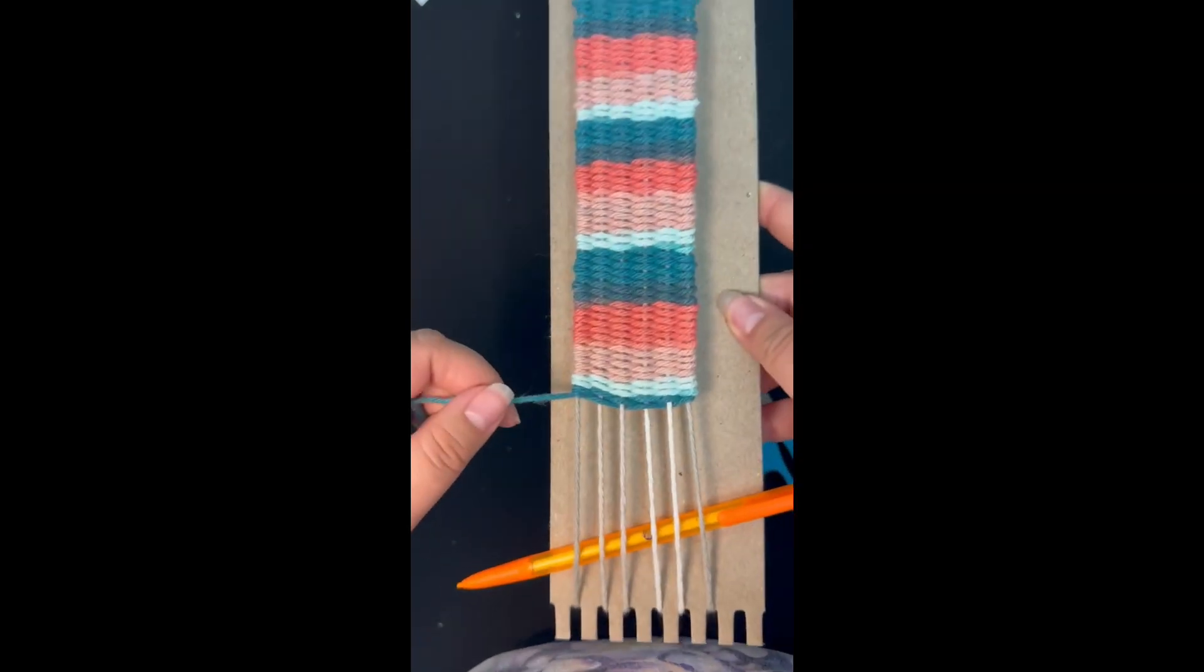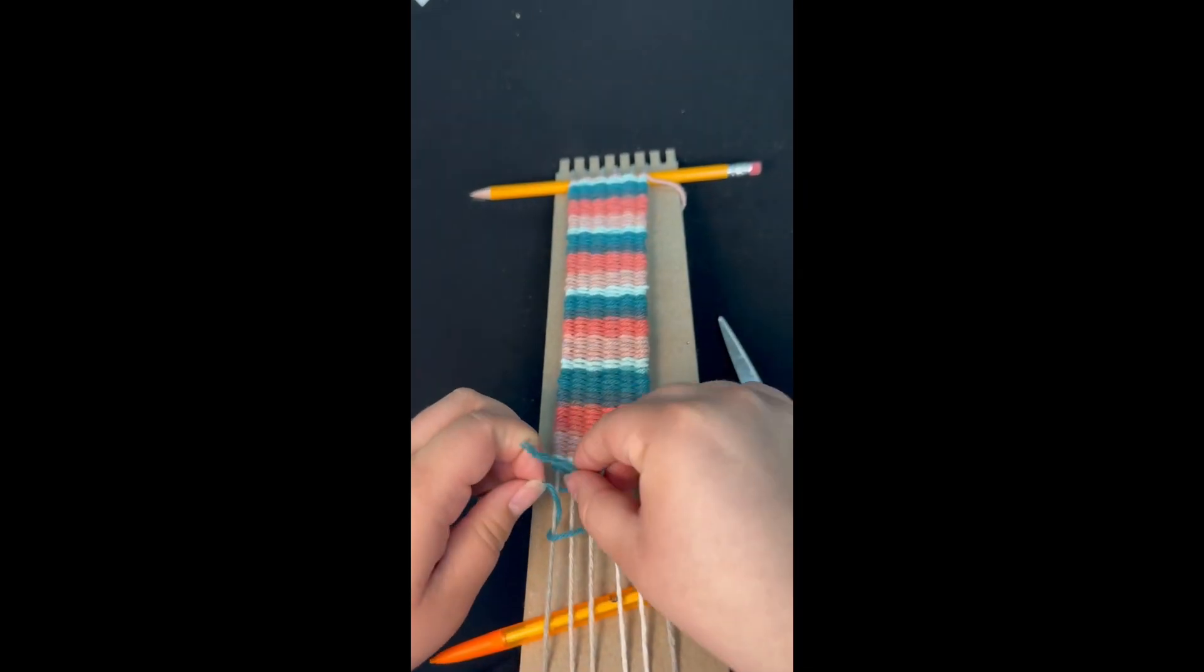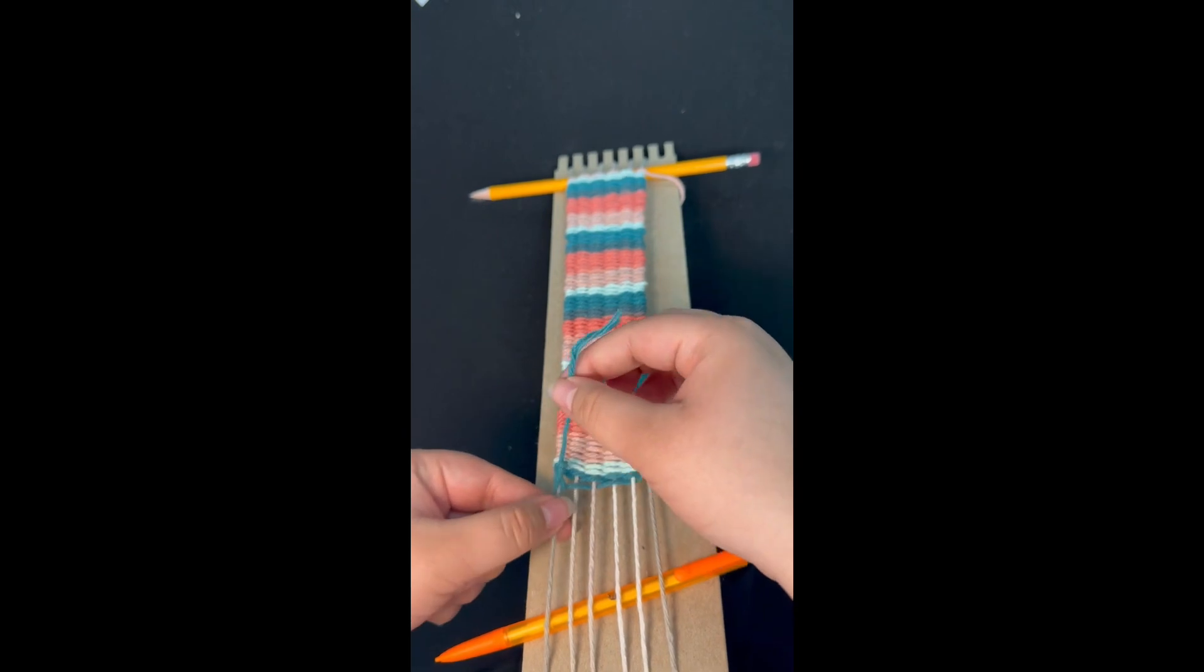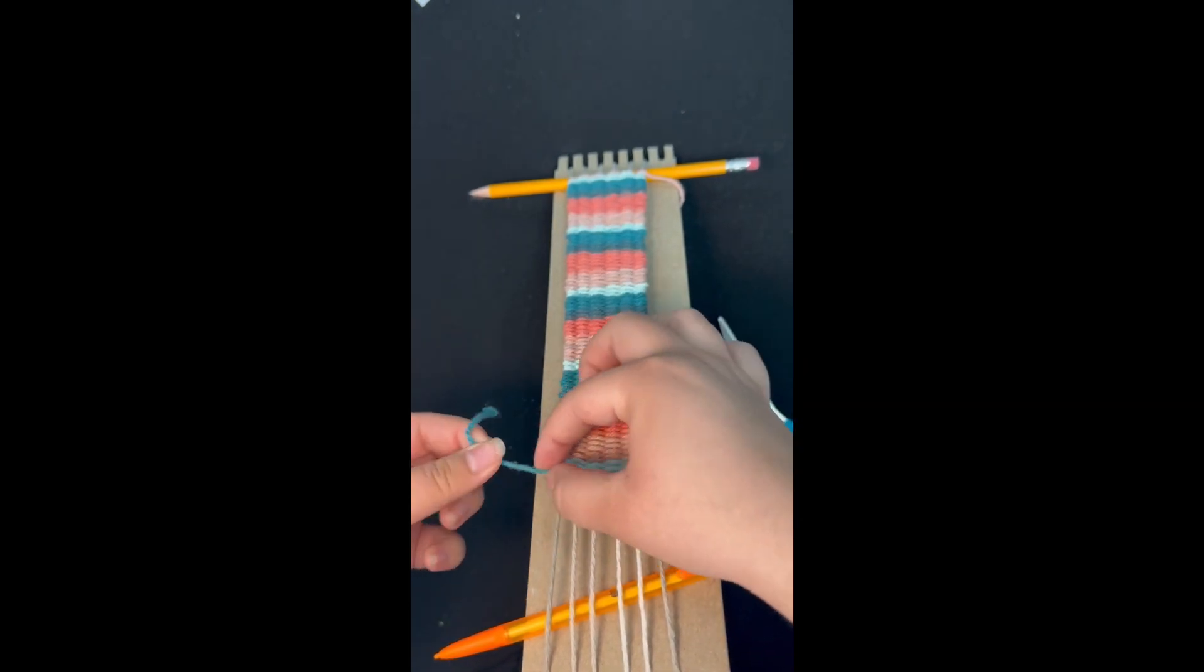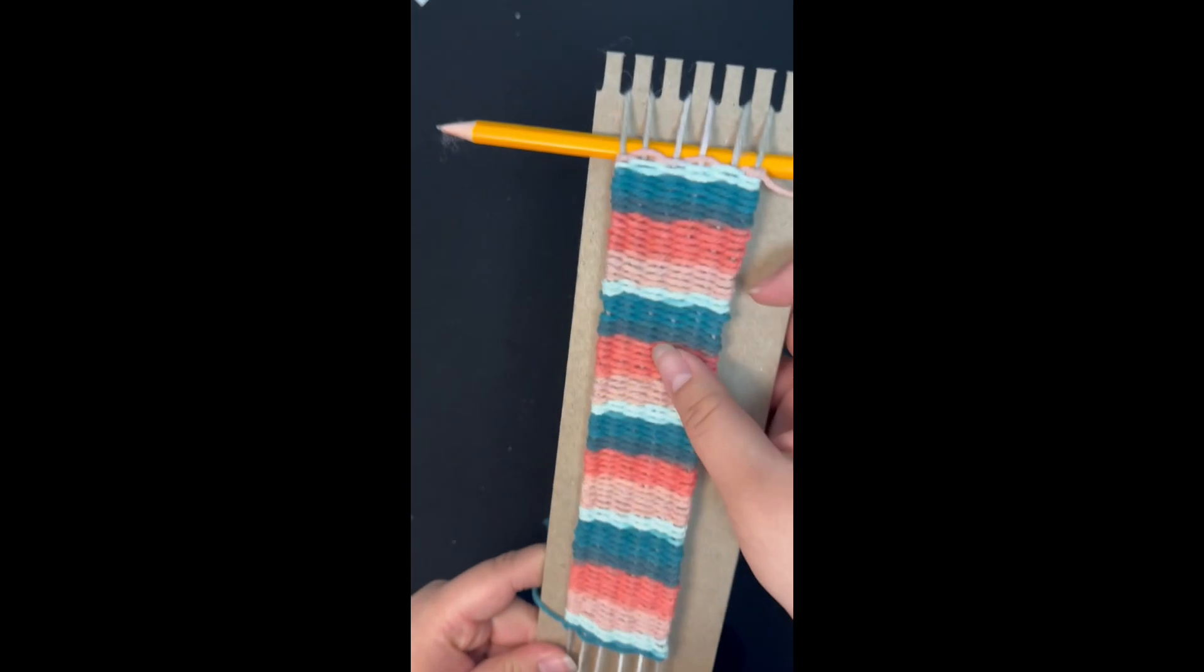Once you get to this point, you're going to take about an inch of the excess yarn and tie another knot, preferably on the other edge of the bookmark to make sure that none of it is unraveling.